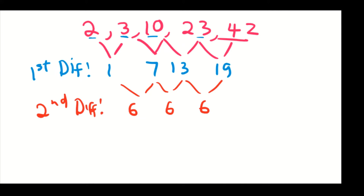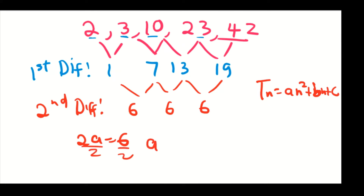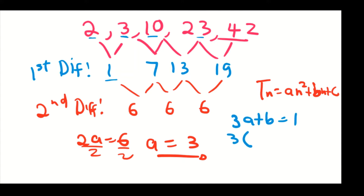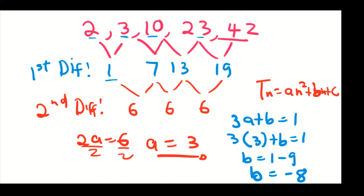Since Tn = an² + bn + c, we find a first. Two times a equals the second difference of 6, so a = 3. To find b, we use 3a + b = first term of the first difference, which is 1. So 9 + b = 1, giving b = −8.